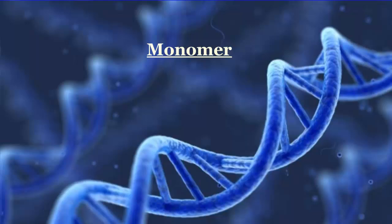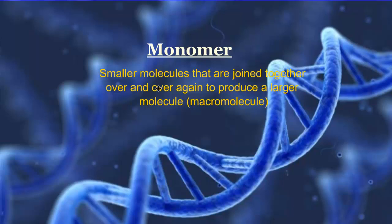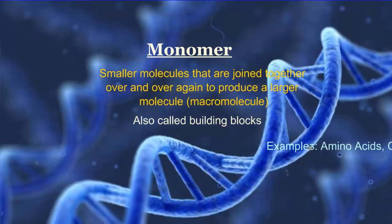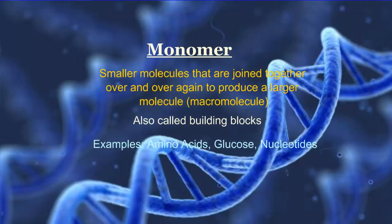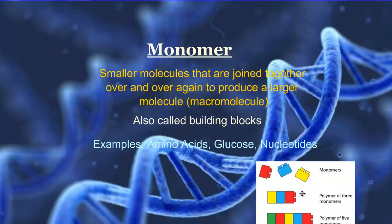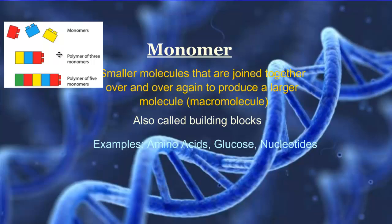Monomer — the prefix mono means one — refers to smaller molecules that are joined together over and over again to produce a larger molecule, which we call a macromolecule. Monomers are the building blocks. Examples in biology include amino acids, glucose, and nucleotides. In a picture, you can see monomers as individual building blocks; click them together and you get a polymer, and lots of them form these big long macromolecules.